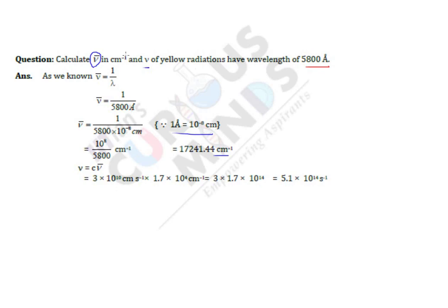That's how we get the value in centimeter inverse. Now frequency is nothing but c by lambda. C by lambda can also be written as c into wave number because wave number is 1 by lambda.